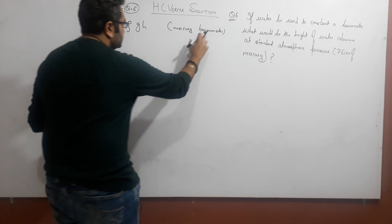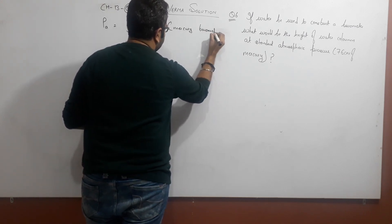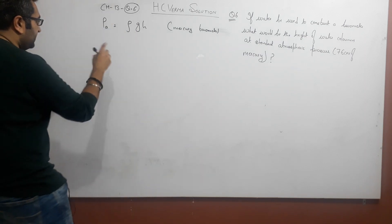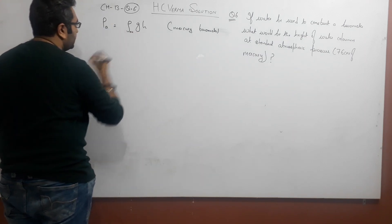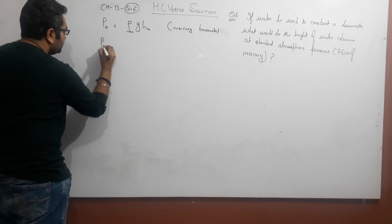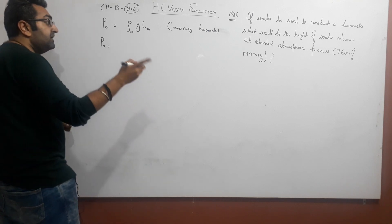So what do we do in it? Mercury's density, density of mercury, height of mercury. If I put it in, atmospheric pressure for mercury barometer. What do we do in it? Water.